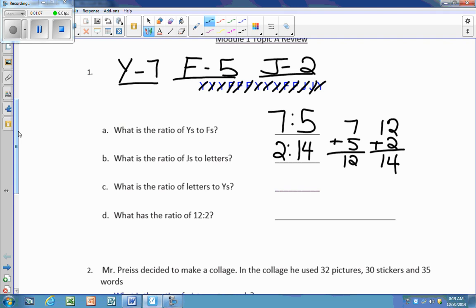What is the ratio of letters to Y's? Well, we just found out our total number of letters on letter B, which is 14. And then Y's, we go back up top, and that is 7.